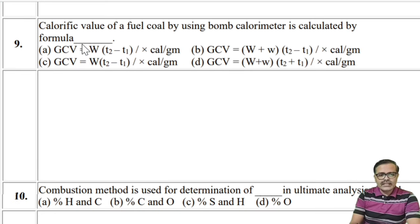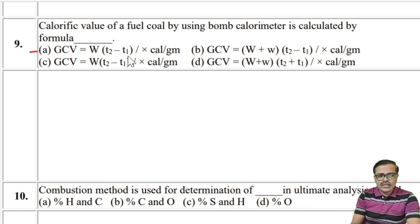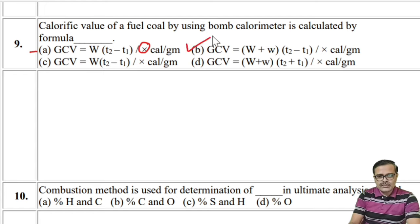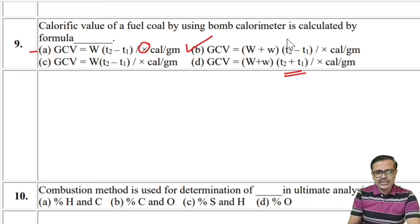To identify the correct formula for the bomb calorimeter: the formula is GCV = (W + w)(T2 − T1) / x. Option A could be for the Boys calorimeter but has x as A1 — not correct. Option C is not correct. Option B shows W·w·(T2 − T1) / x. Option D has T2 + T1, but it should be T2 − T1. So option B is correct.